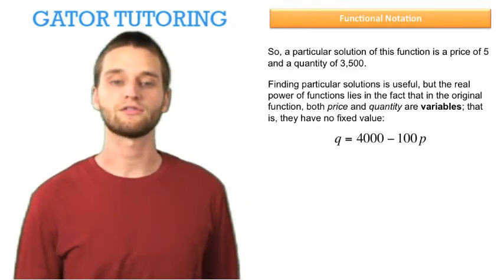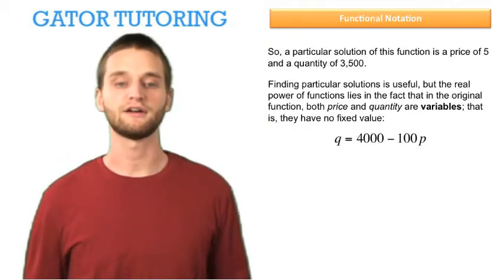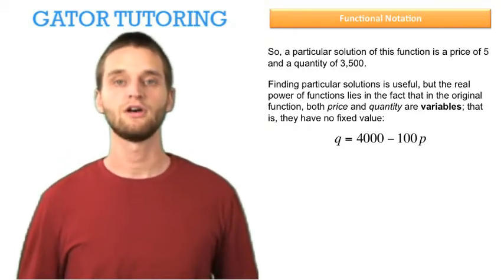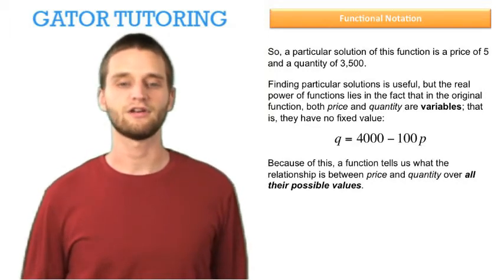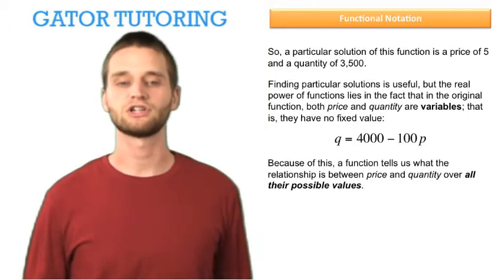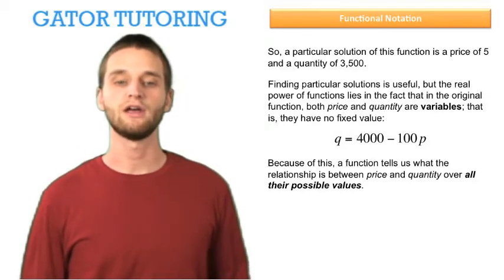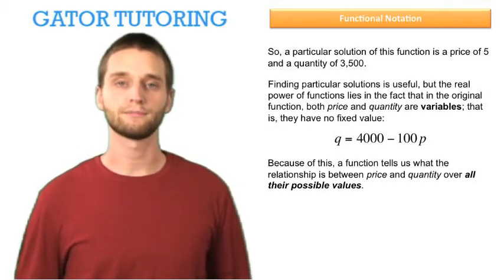Q equals 4000 minus 100P. We can see here that both quantity and price are left as arbitrary variables. They don't have a fixed value. Because of this, a function tells us what the relationship is between price and quantity over all their possible values.